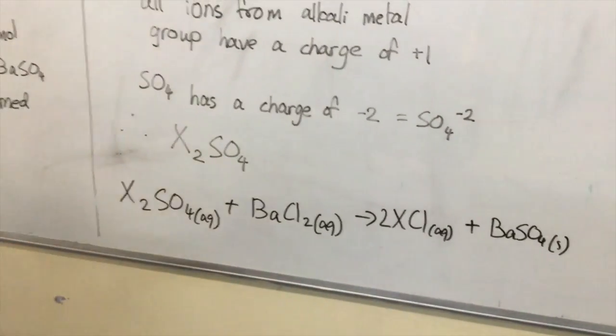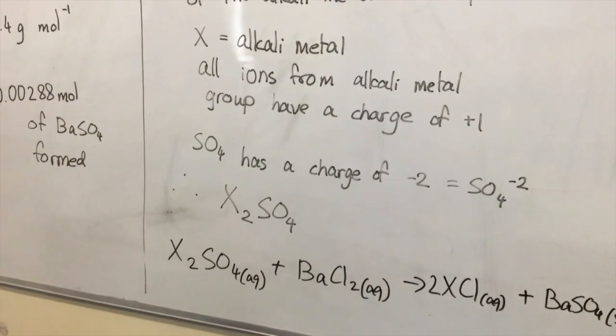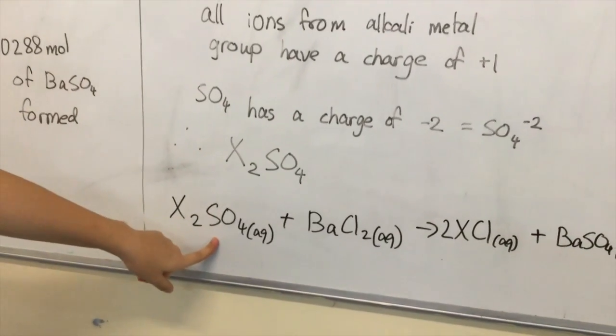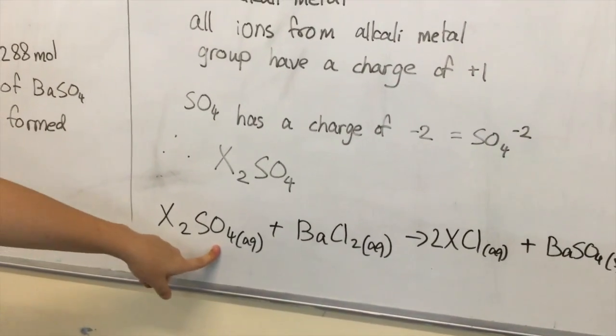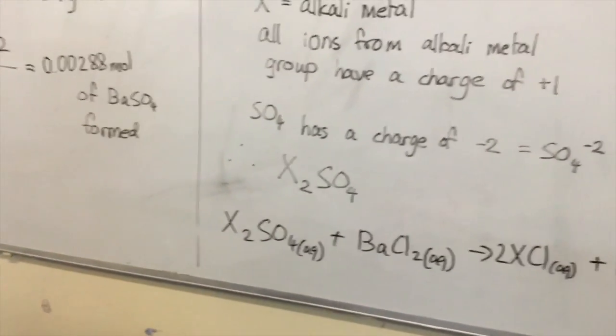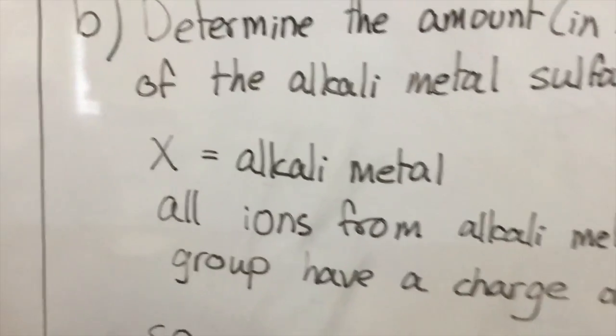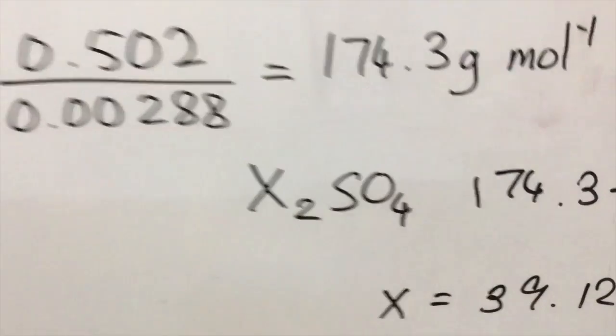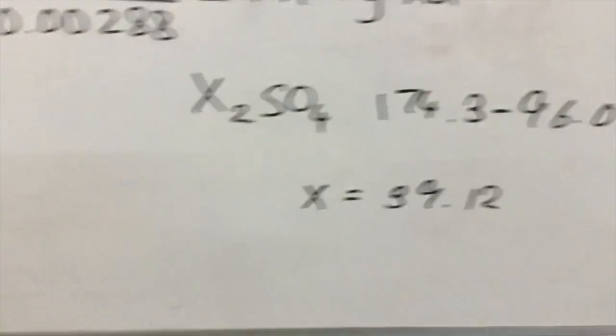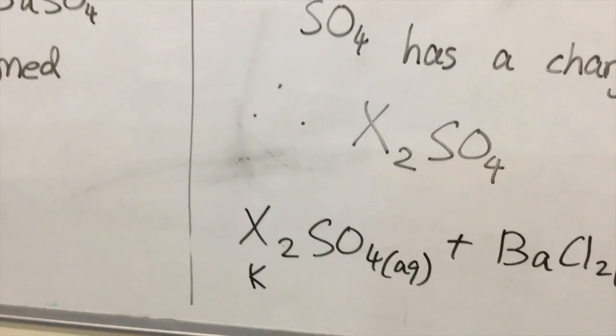Does it make sense? If X is potassium, would it be K2SO4? Yes, because it has a charge of plus one. SO4 has a charge of minus two. So to balance the two, we need two potassium ions. So it all makes sense. We can confirm that group one is the alkaline metals. We found that the relative atomic mass is 39, and we found out that X was potassium.